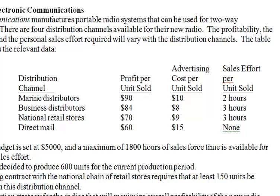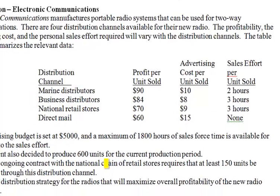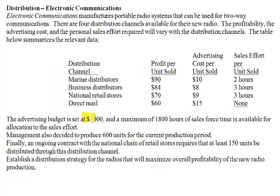There are limits to the resources: $5,000 for advertising and 1,800 hours of sales force time. We are also told that the total number that will be produced is 600 units, which will need to be divided among the four distribution channels. Finally, by a contract requirement, at least 150 units should go to the retail stores.